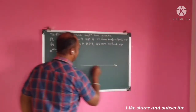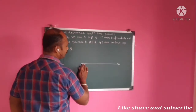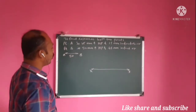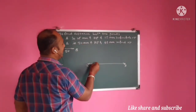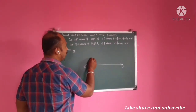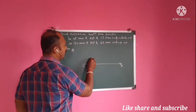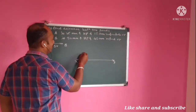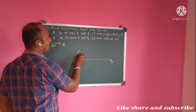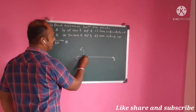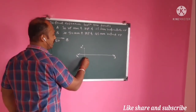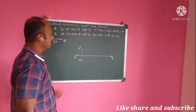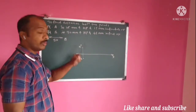First draw the XY line. Then mark the points. Point A is 25 mm above HP — draw this point 25 mm above HP, so this distance is 25 mm, and this point will be A dash. And 15 mm in front of VP — so this is the top view of this point, and this is the front view.